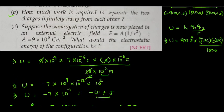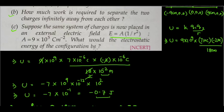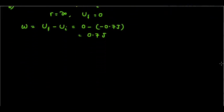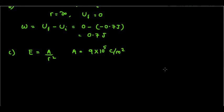For Part 3: the same system of charges is now placed in an external electric field given by E = A / r², where A is a constant with value 9 × 10⁵ coulomb per meter square. In the first two parts there was no external field, but now we must consider the charges placed inside this external electric field.